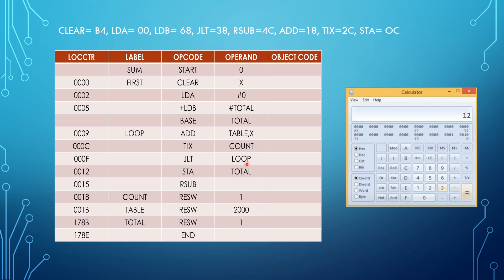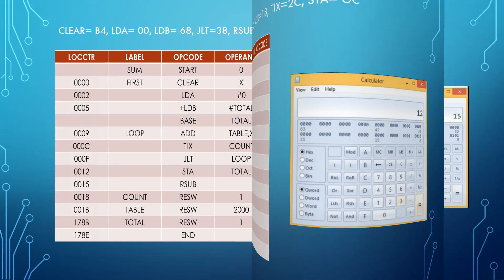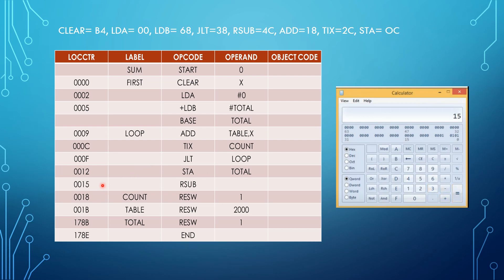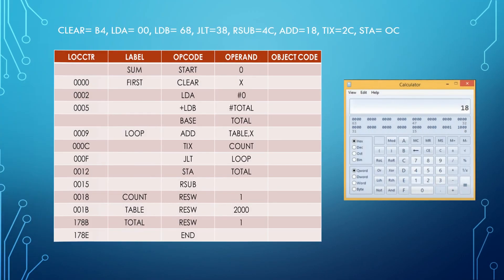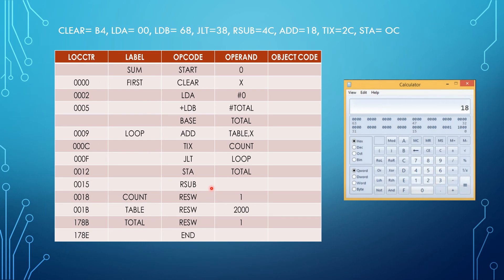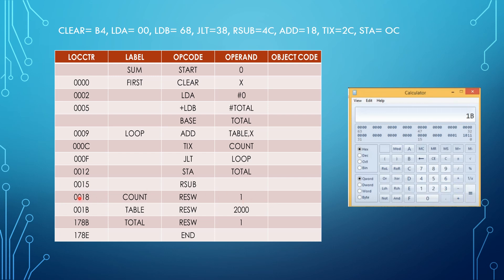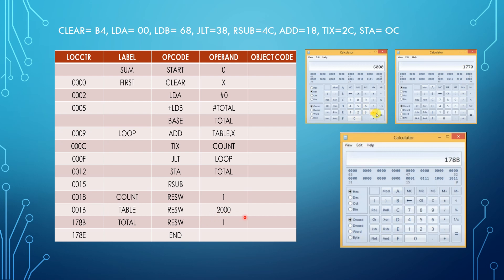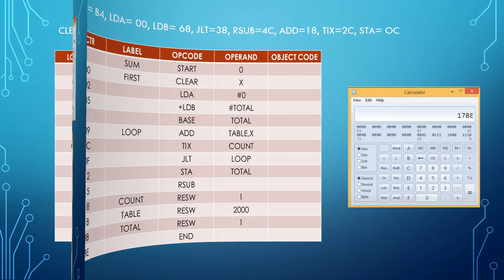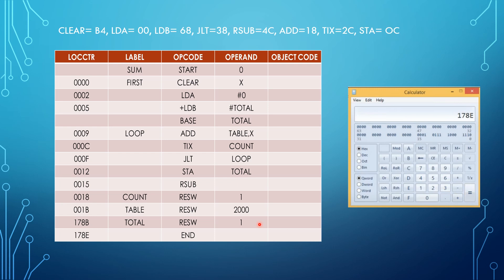The following instruction is again Type 3, so we add 3, obtaining 12 as the location counter value. The next Type 3 instruction adds 3, giving 15. Another Type 3 instruction adds 3, giving 18. We then reserve 1 word, which equals 3 bytes, giving 1B. Next, we reserve 2000 words, equal to 6000 bytes, which in hexadecimal is 1770. Adding 1770 to 1B gives 178B. Finally, we reserve 1 more word (3 bytes), giving 178E as the final location counter value.